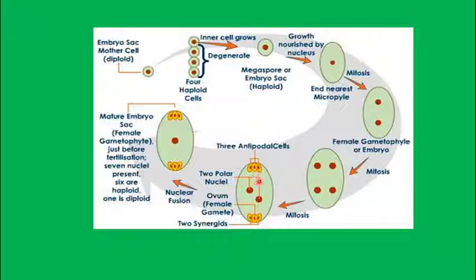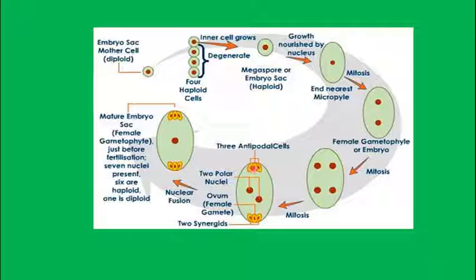Once the eight-cell stage is formed, there is cell wall formation, leading to the seven-celled embryo sac (with eight nuclei). At the chalazal end, three cells group together — known as antipodal cells. At the micropylar end, three cells group into an egg apparatus. In the egg apparatus, two are synergids and the middle one is the ovum or female gamete.